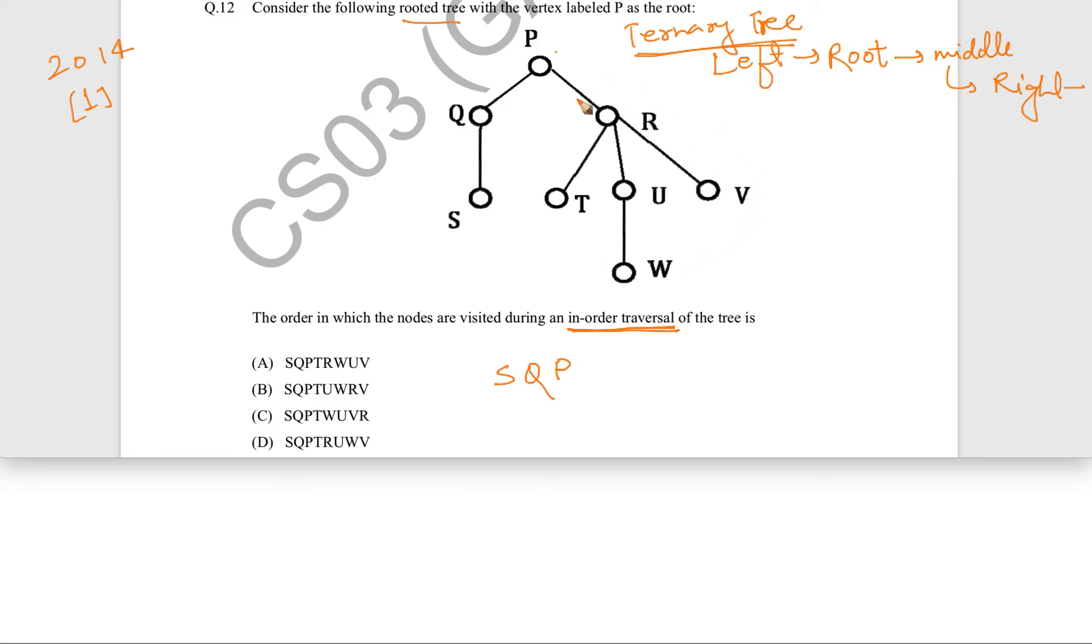Now in this right subtree, again we have to traverse, but now it is a ternary tree, strictly ternary. So we can follow this rule: left, root, middle, right. So firstly, we are going to see left. So left T.